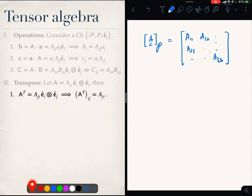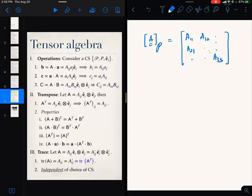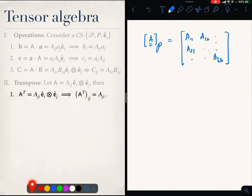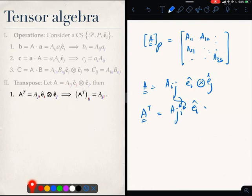What this also means is that if I was to find the components, what is the ijth component of A transpose? The ijth component of A transpose is A_ji. So, if A is A_ij e_i tensor e_j, then A transpose, the transpose of the tensor is A_ji. J is here and i is here, e_i tensor e_j.